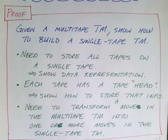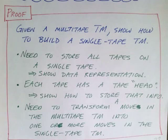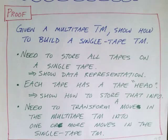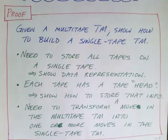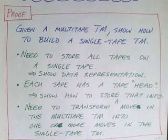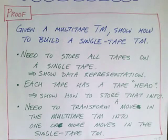We also need to show how a move in a multi-tape Turing machine can be done in one or more moves on the single tape Turing machine. What we're doing is showing that if you give me a multi-tape Turing machine, I can turn it into a single tape Turing machine — I can build a single tape Turing machine that will do the exact same thing.